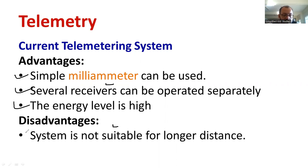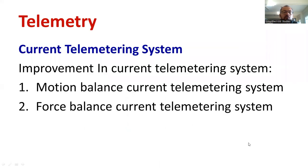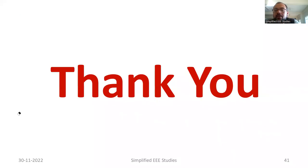When it comes to the drawback, system is not suitable for longer distance. For longer distance, maximum 300 meter, you can use the current telemetry system like voltage telemetry system. If you want to go above, you have to depend on other type of telemetry system. In this session, I have briefly explained what is the current telemetry system. Also, you can see the different varieties of current telemetry system, such as motion balance current telemetry system and force balance current telemetry system. Let me know if you have any further details required. Thank you so much for watching this video. Happy learning.